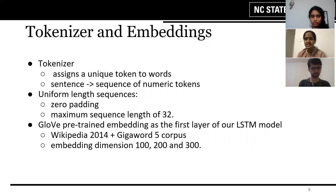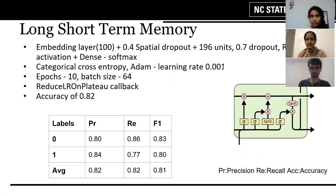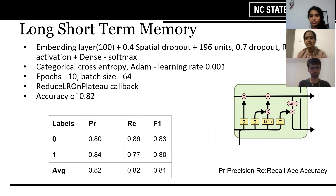The vectors provided from GloVe can be of dimensions 100, 200, or 300. Embedding dimension is also a hyperparameter, and a bigger dimension captures more information but could also lead to overfitting. The LSTM model has an input gate, an output gate, and a forget gate, which allows it to read in some context and makes it suitable for text data.